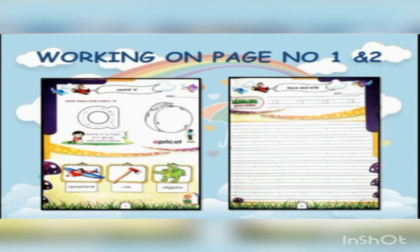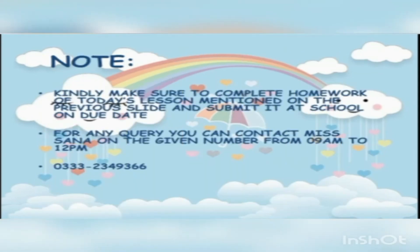On page number 2, we are going to learn a new thing about the letter A. Letter A is a grass letter. Why? Because we write it on the middle two lines of the paper. So letter A is a grass letter. You have to copy the letter A from the top line and write it and trace it on the rest of the page.